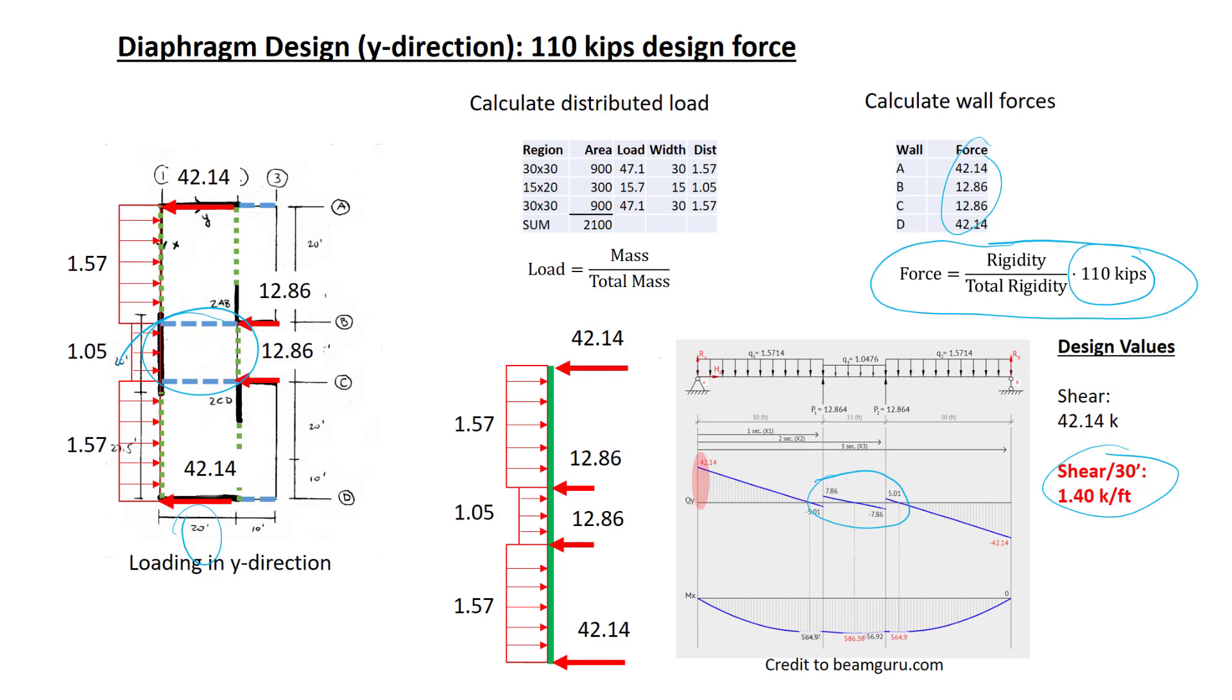Moving on to the moments, we find here the maximum moment of 586.38 kip-feet. The chord force is found by dividing by the distance between the chord elements, this 20 feet right here, to obtain a chord force of 29.3 kips. So we now have the shear per unit length for design. We have the chord force to resist moment. We would also have to look at the collectors, but we're not doing that in this section. So we've covered all the necessary quantities for diaphragm design in the y direction.